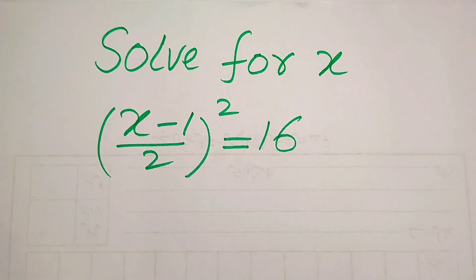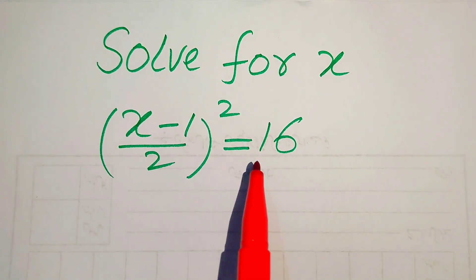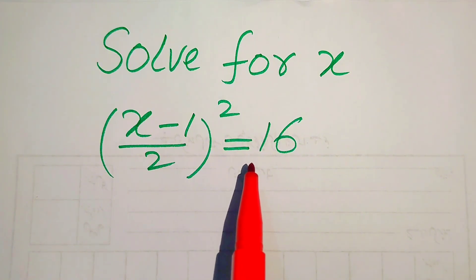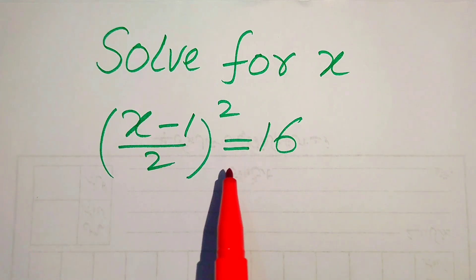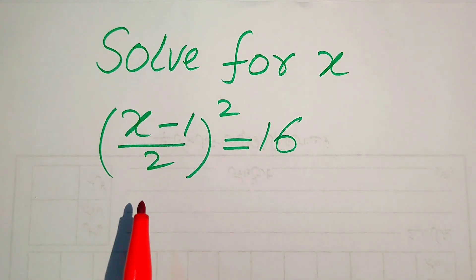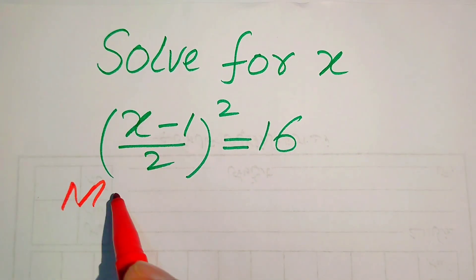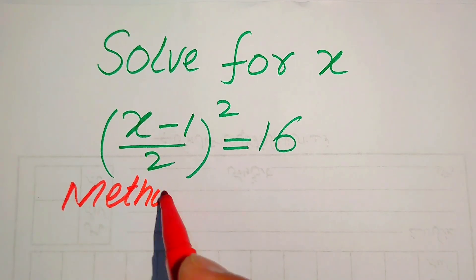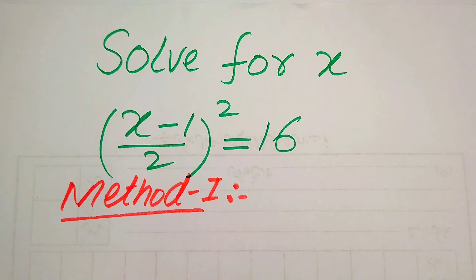Hello everyone. How to solve this problem for the values of x if we have (x minus 1 over 2) whole squared equals 16. We solve this problem for the values of x. First we find all the roots of this equation, and then we check which of the roots are solutions or which are extraneous roots. We solve this problem using two methods. If you have any other method in mind, please don't hesitate to write it in the comment section.